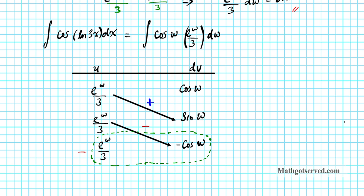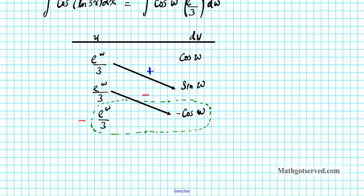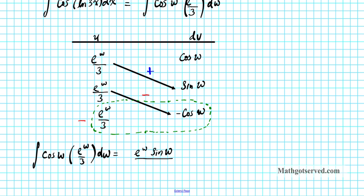Let's set up our integral. The original integral of cosine W times E to the W over 3 dW equals the first diagonal pair — multiplying these two with a positive sign gives E to the W sine W over 3. The next pair: minus times minus makes a plus, so plus E to the W cosine W over 3. For the last portion, since we go horizontally, there's an integral. Multiplying minus times minus times minus gives three minuses, so minus the integral of E to the W cosine W over 3 dW.